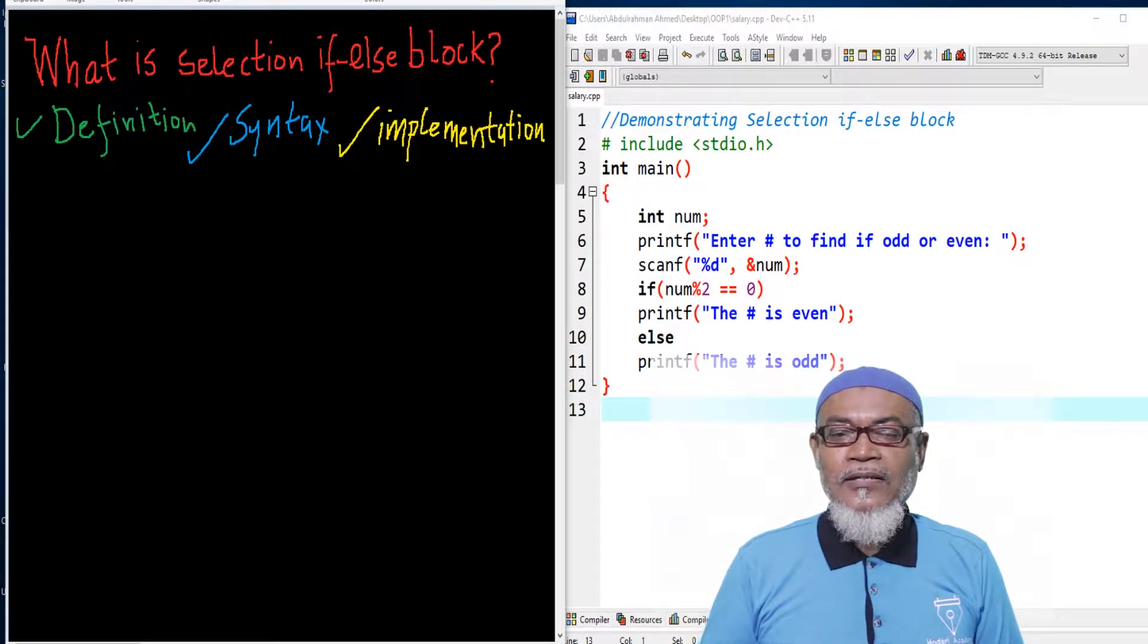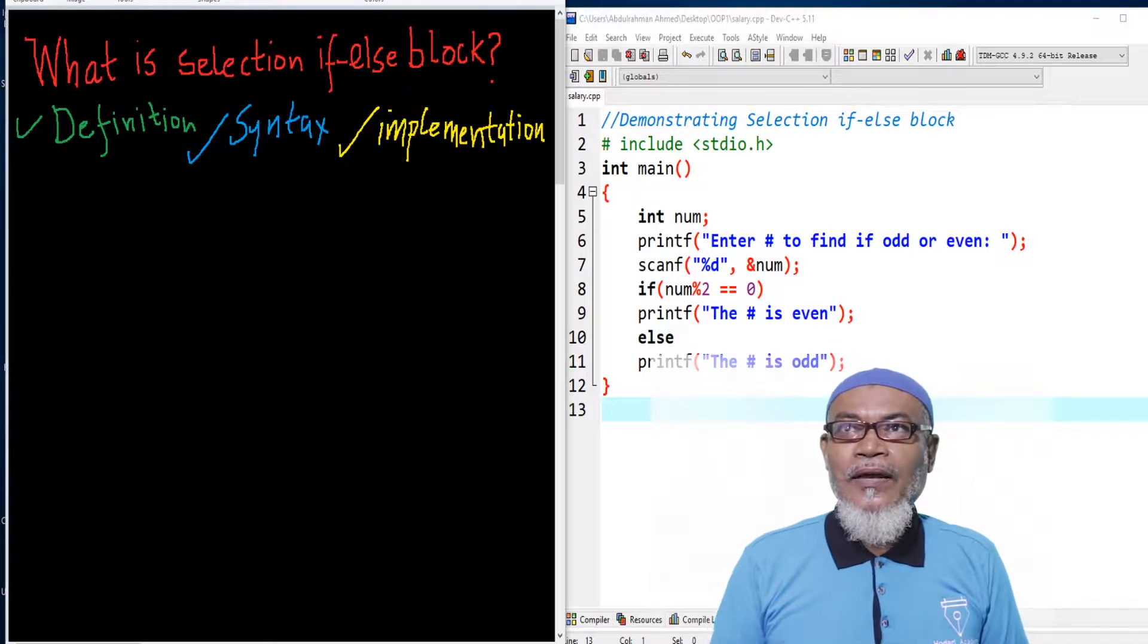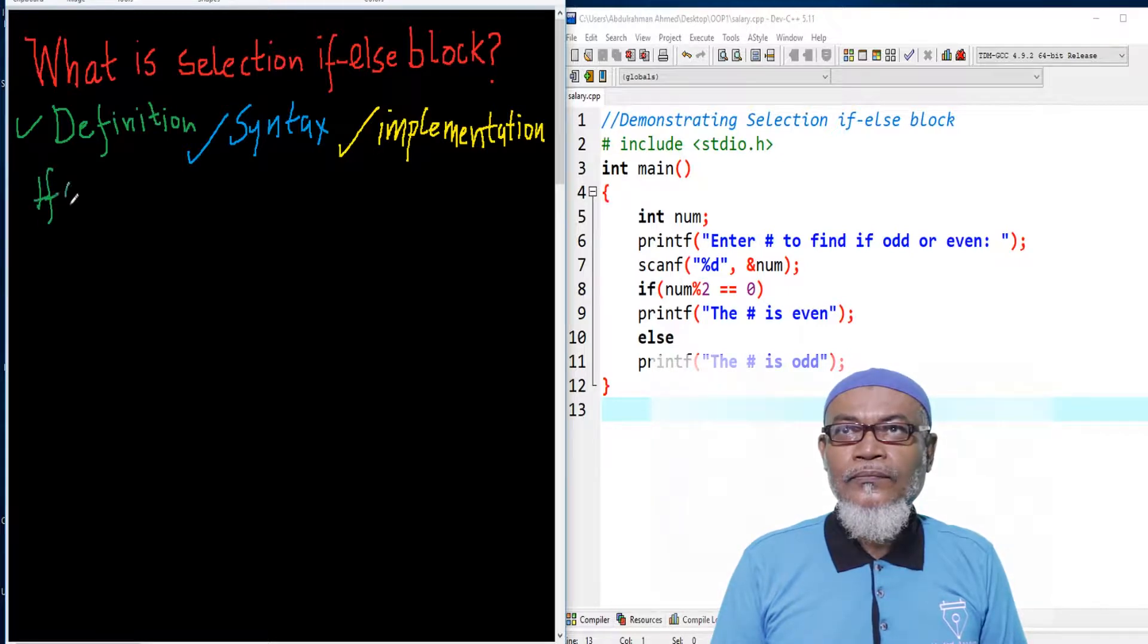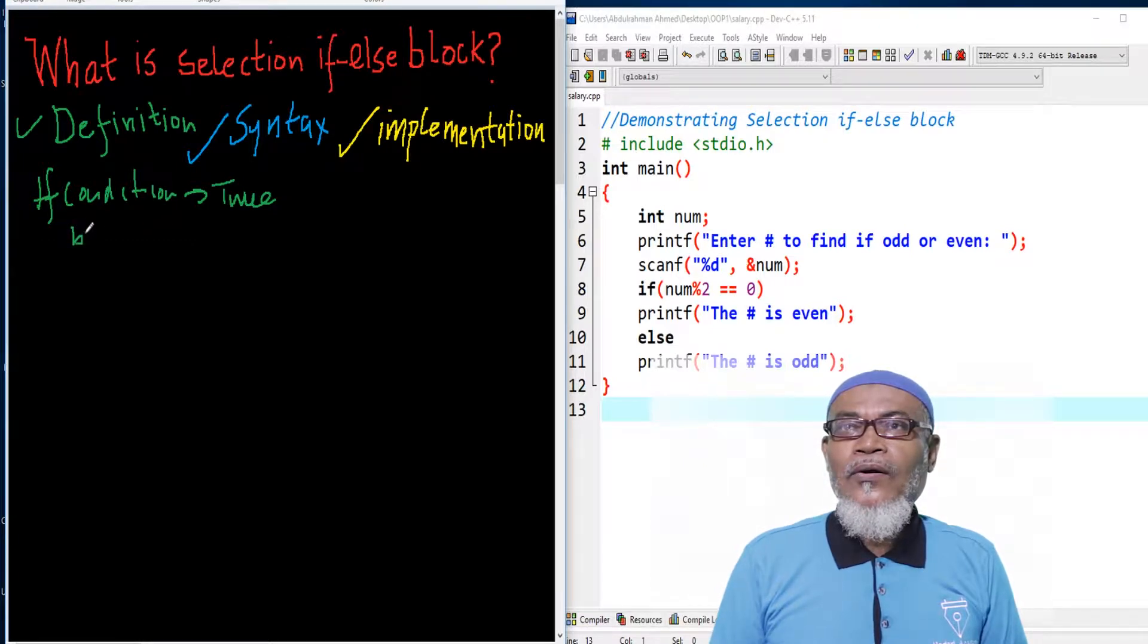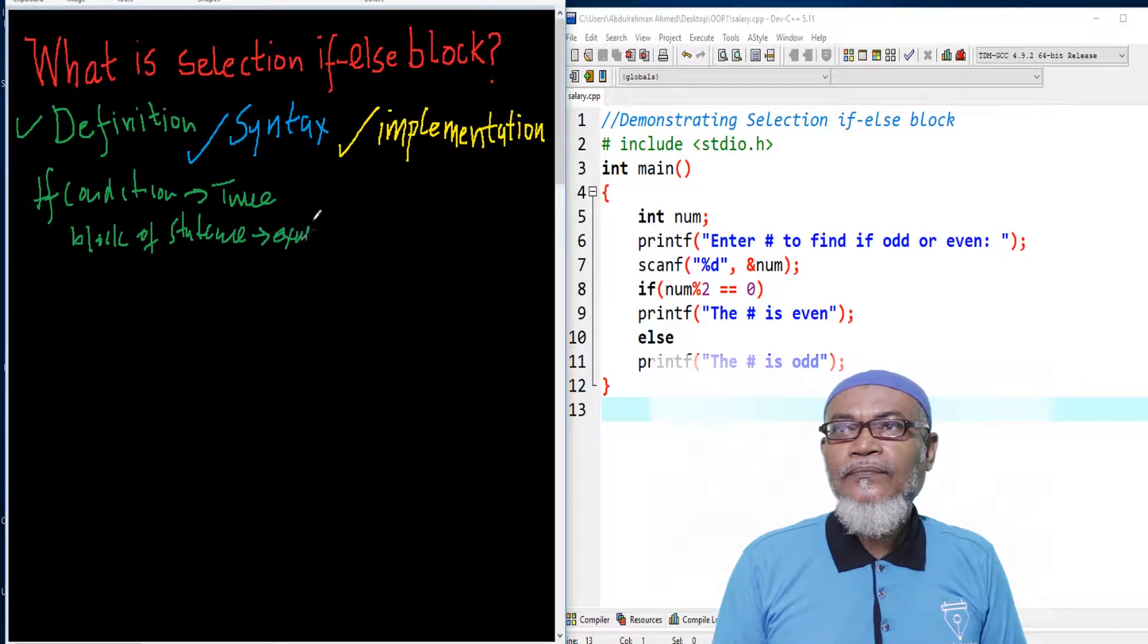So let's start and see what actually is the if-else block. An if-else block: if a condition is true, then a block of statements is executed. While if a condition is false, another block of statements is executed.